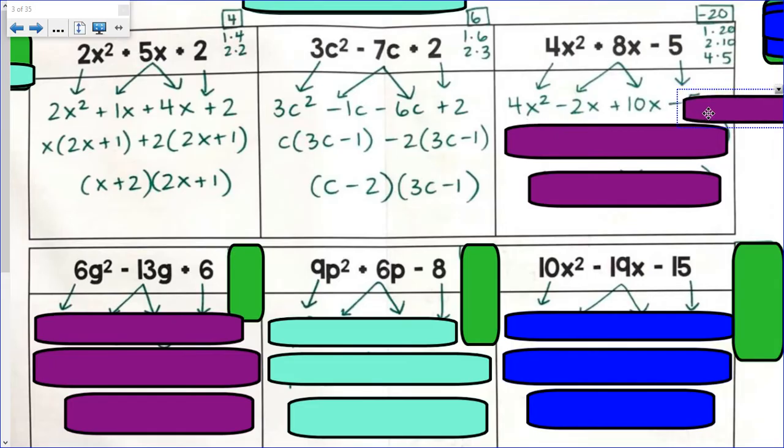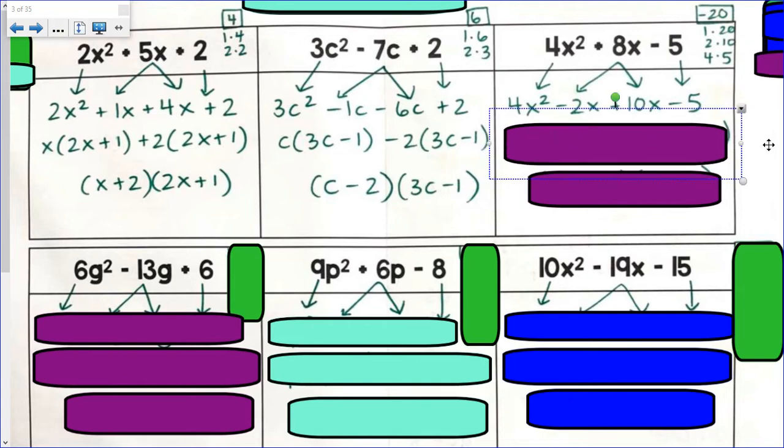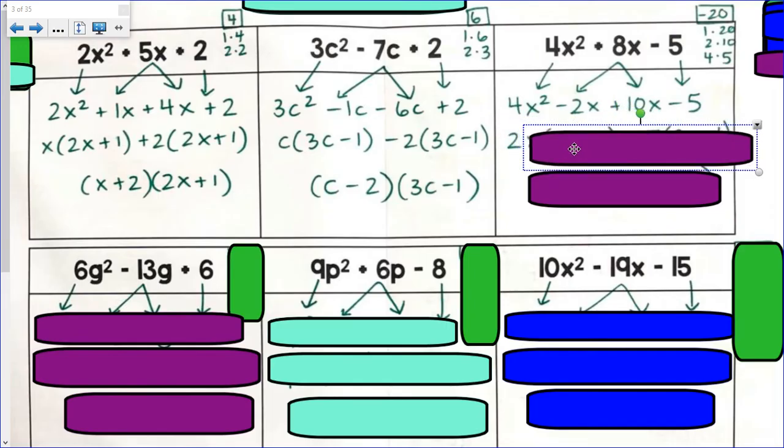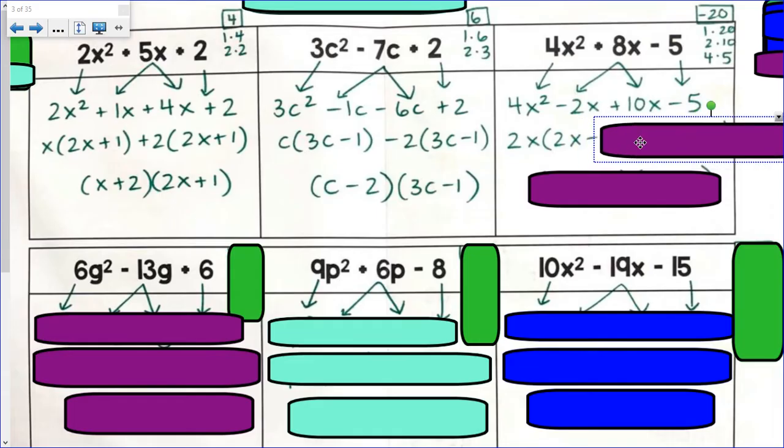We're not really doing anything to it except for just purposely breaking it apart. I factor out my GCF of the first two terms. GCF of 4x² minus 2x would be 2x. Then 2x times 2x is 4x². 2x minus 1 would be my binomial.